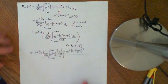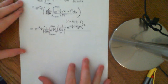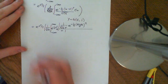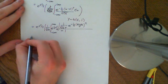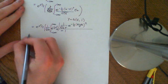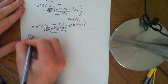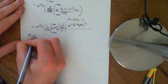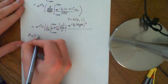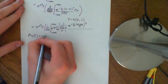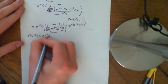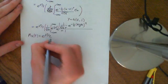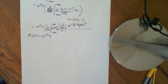Therefore, the moment generating function of the standard normal distribution is equal to e to the t squared over 2. In the next video, we will generalise this result for the general normal distribution.